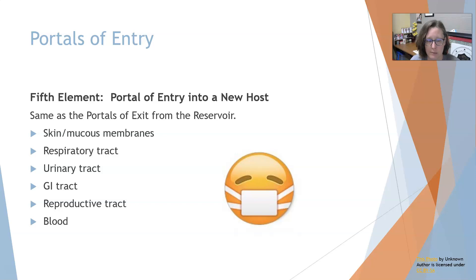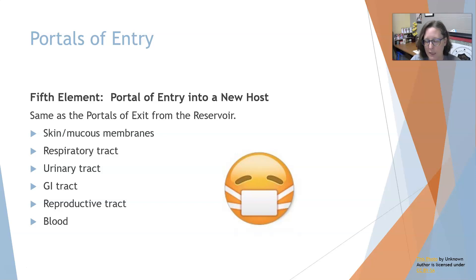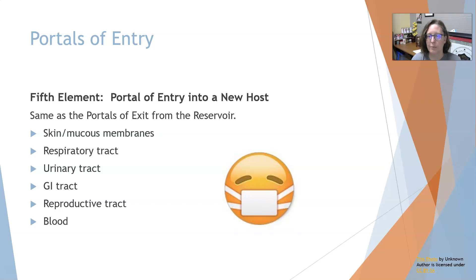The reproductive tract is a portal of entry for sexually transmitted infections passed from one person to another. Contaminated blood is another route — using a dirty or contaminated needle and injecting it into a vein is a direct entry into the bloodstream.